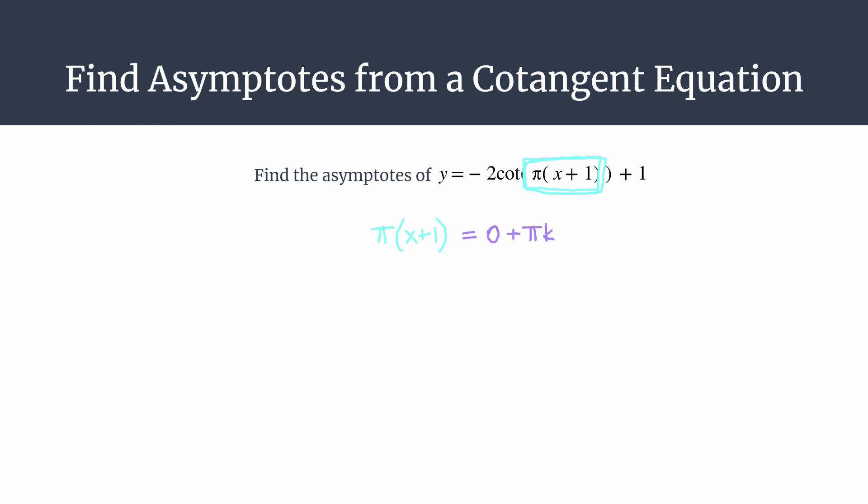Now we just need to solve for x. The first thing we'll do is divide both sides by pi. Make sure when you do this, you divide every single term by pi. On the left side, you're left with x plus 1. Of course, 0 divided by pi is 0. And then pi k divided by pi is just going to be 1k, or even just k.